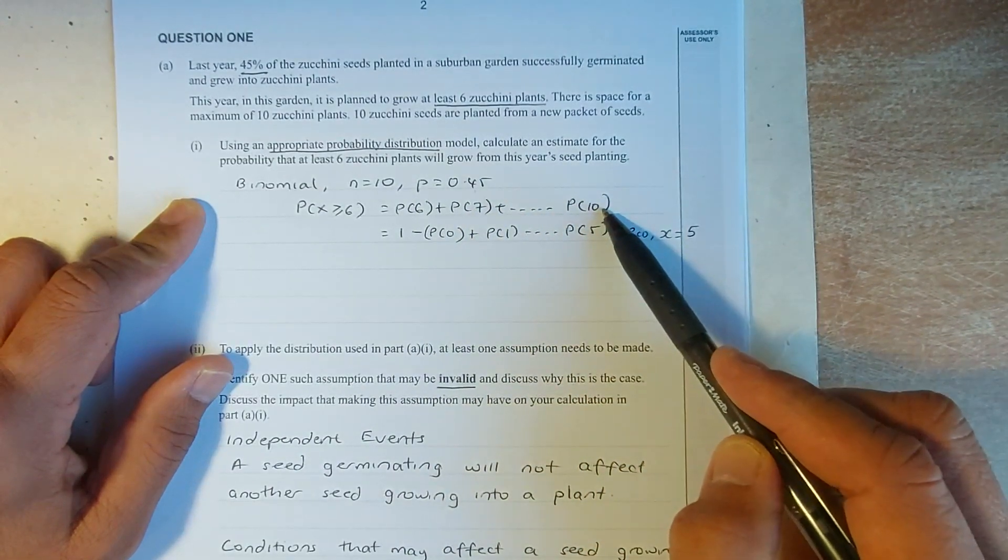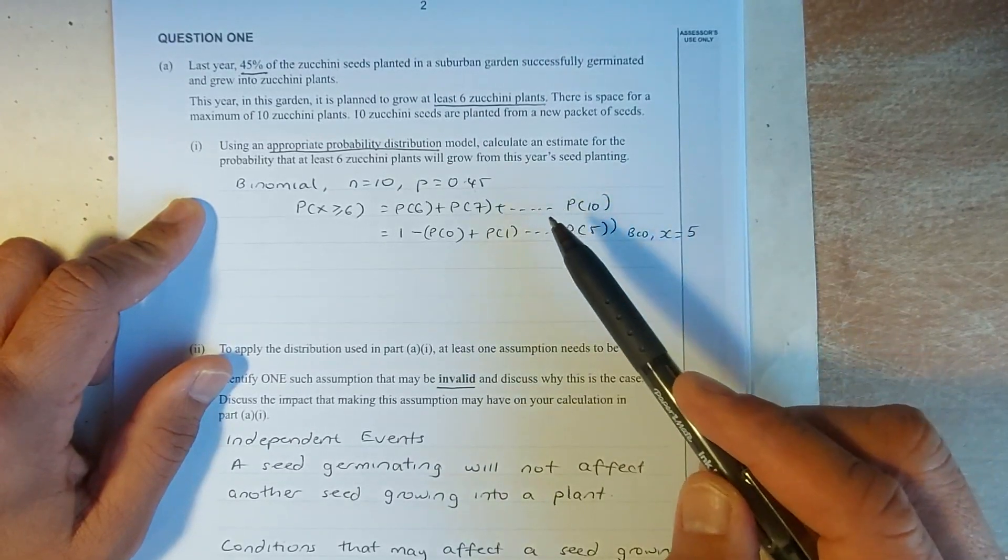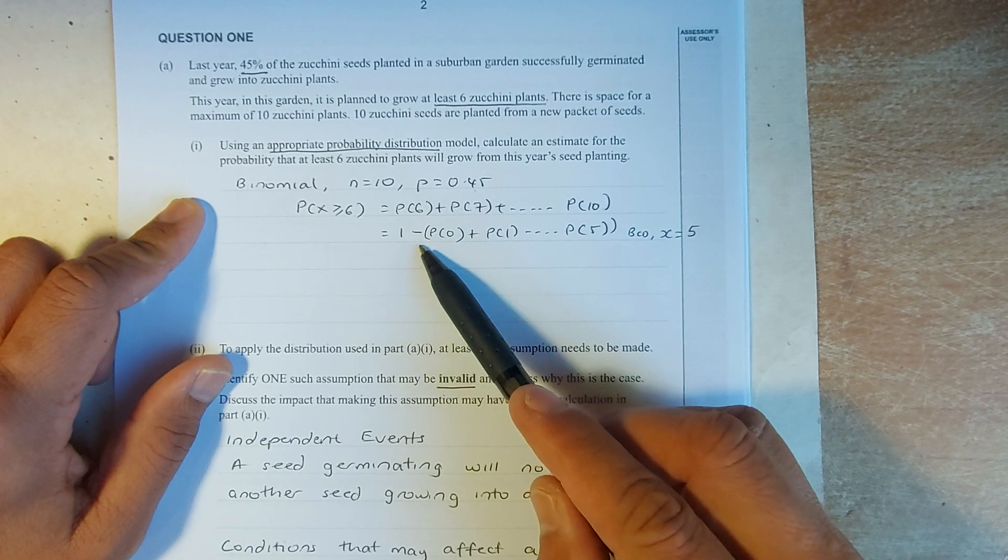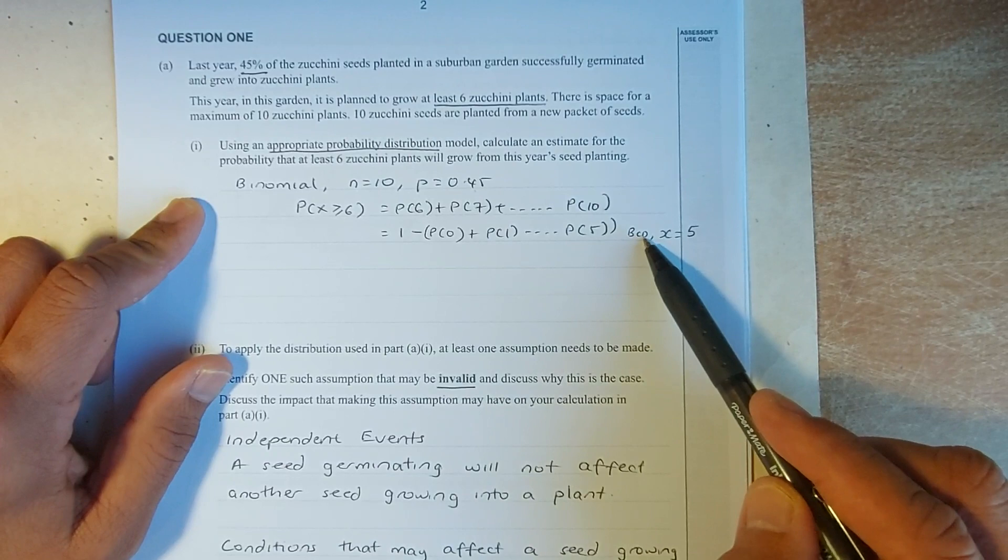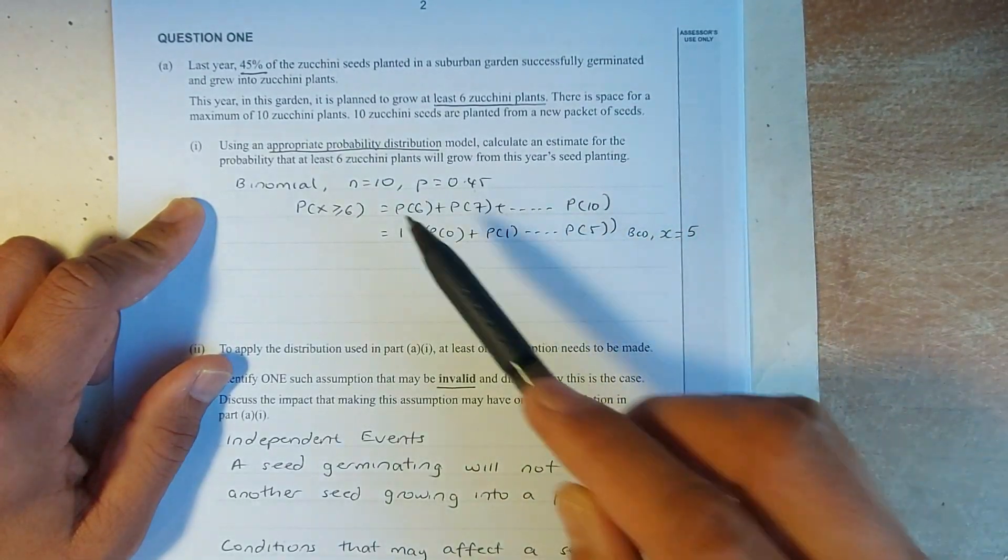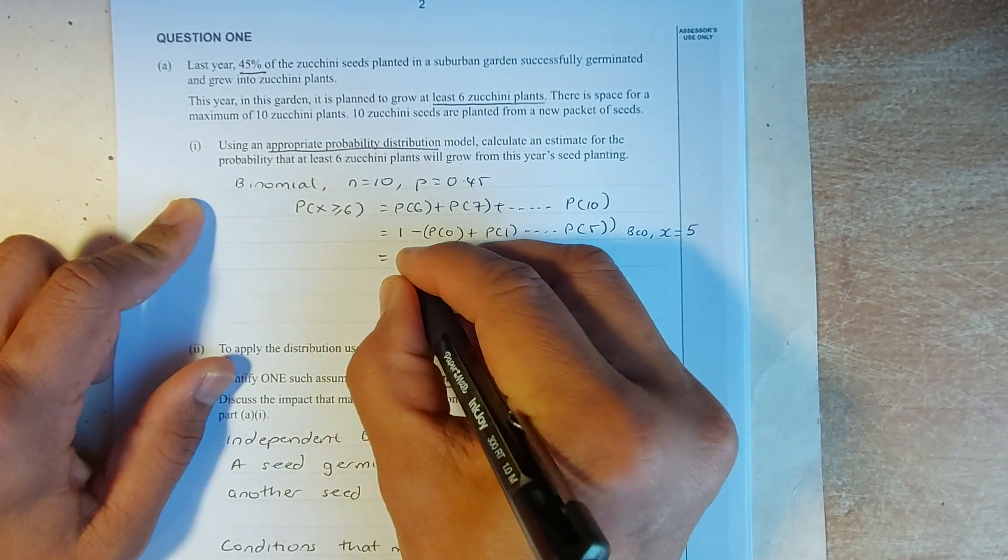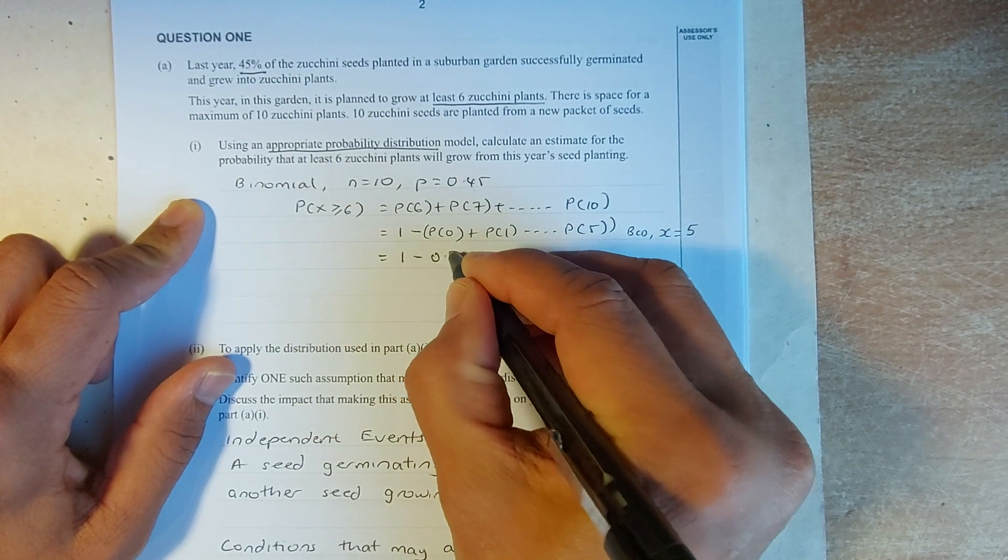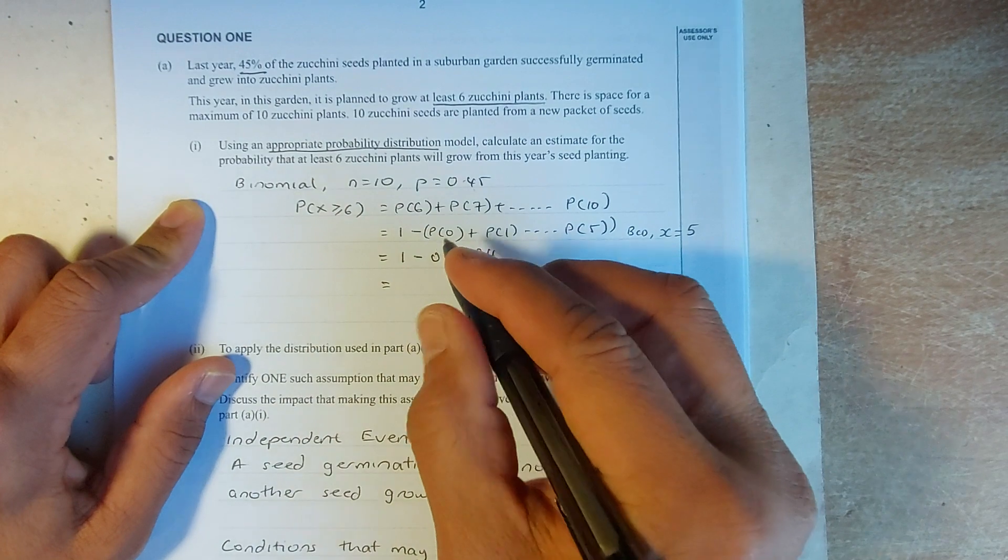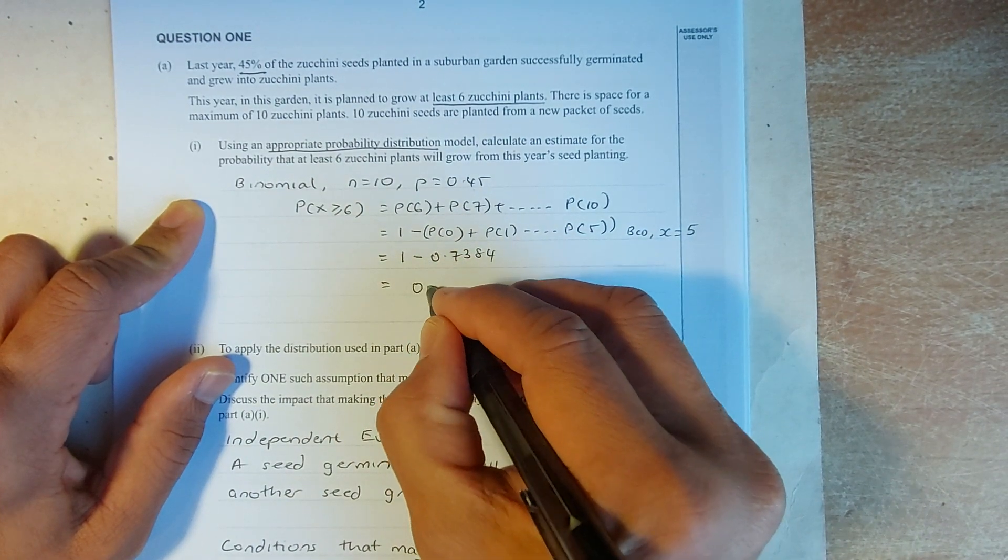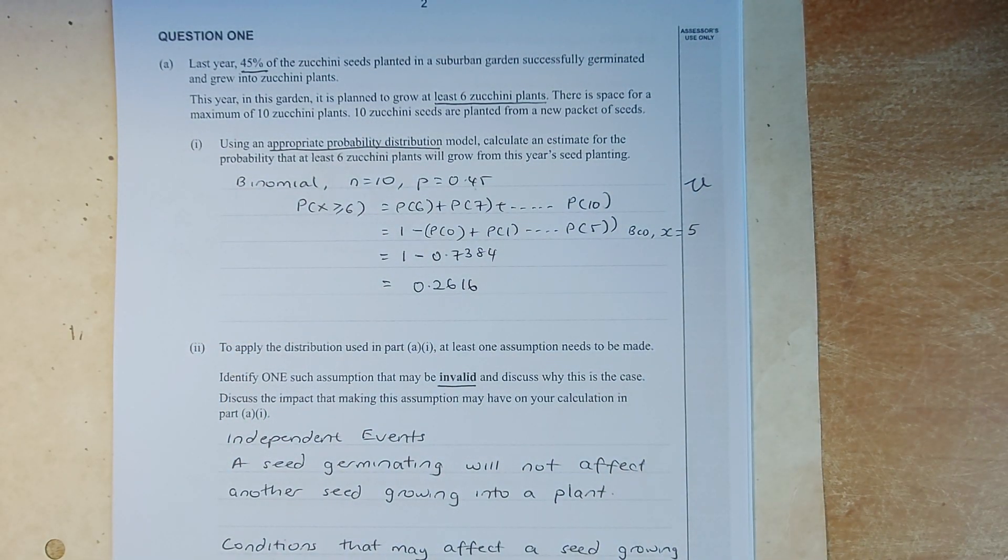You can use BPD in the binomial but I suggest you do the cumulative so we can calculate 1 minus 0 to 5. If you put in your calculator BCD and X equal to 5 and N equal to 10 and P equal to 0.45 you calculate that it's going to be 0.7384 and you must minus 1 from it and the answer is going to be 0.2616 and that will give you an achieve.